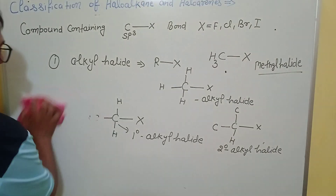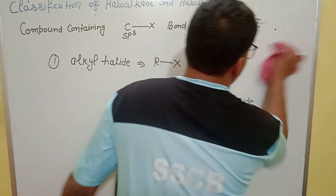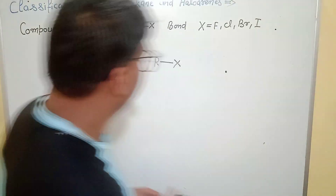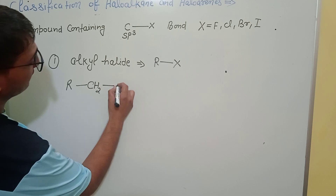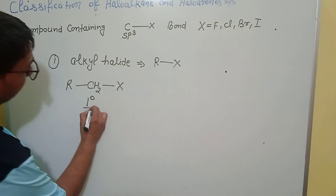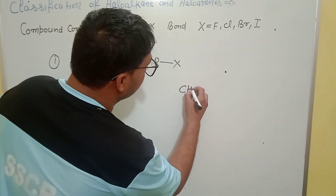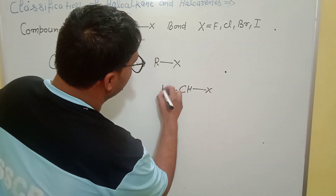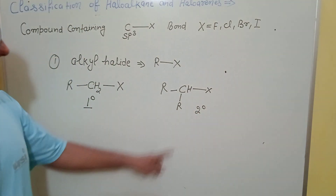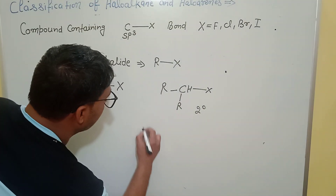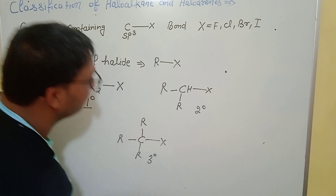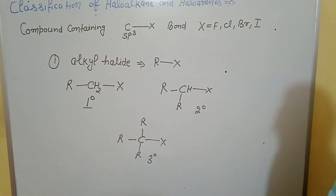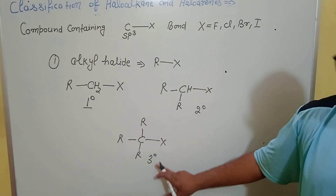In structural notation: primary is R-CH2-X, secondary is R-CHX-R, and tertiary is R-CX(-R)-R. So alkyl halides are basically of three types: primary, secondary, and tertiary.